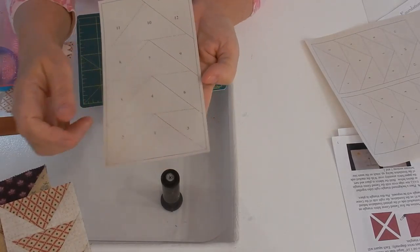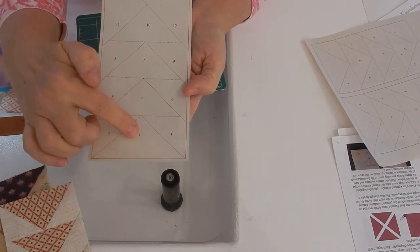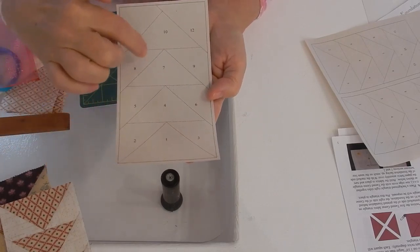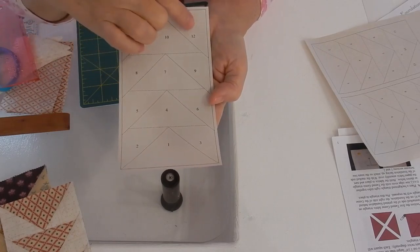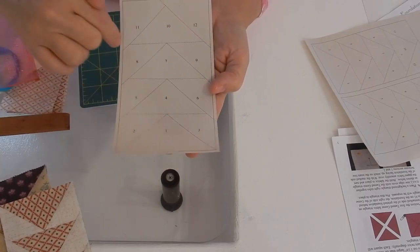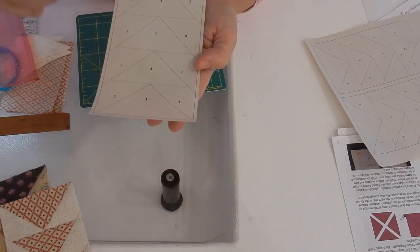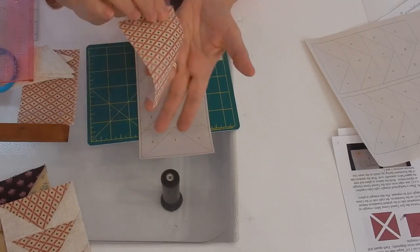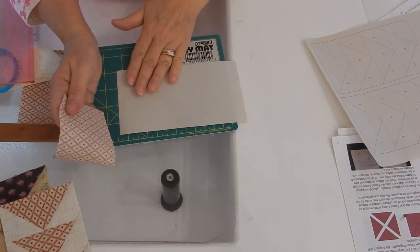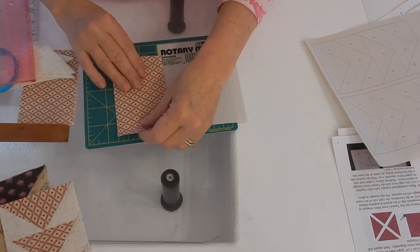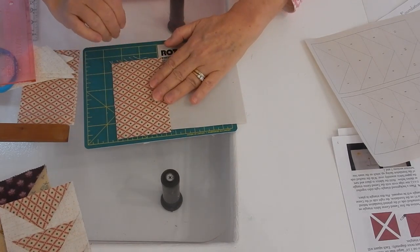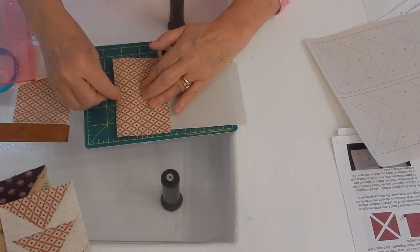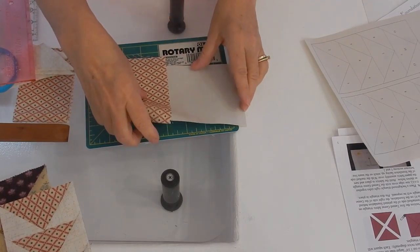You'll notice on these pieces of paper they have numbers, so you're always going to start with one, then two, three, four, five, and so on. The dotted line is where you sew, solid line is where you cut. My very first piece is number one, so I'm going to take my fabric, turn my piece over, and put it right side up. I'm going to put a pin in it.